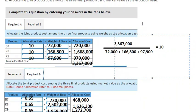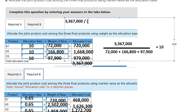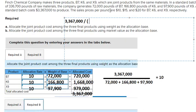We have three million three hundred sixty seven thousand, then we divide by this one. So we have the total product in here, which is about 72,000. We multiply by the sales price in here. The next one is about 15, and the last one.